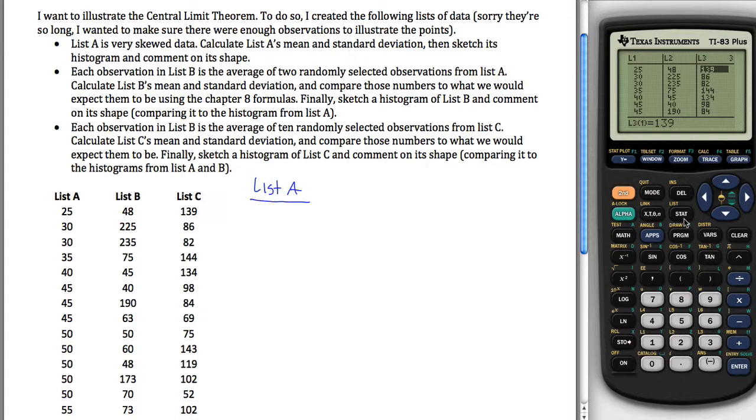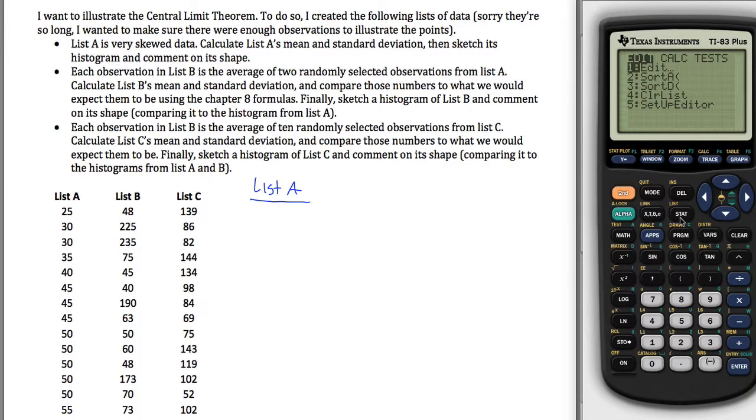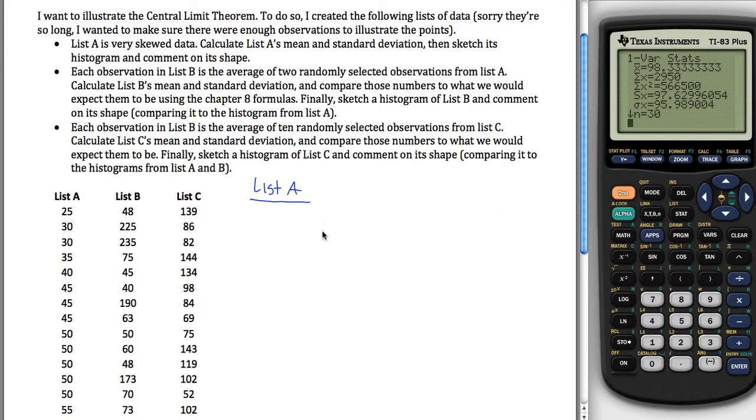Calculate the mean and the standard deviation. So we can do that if you - the way to get your calculator to calculate the mean and the standard deviation is hit your stat button, and then go to calc, and then one variable statistics. So I want one variable statistics on L1, and that will give me my mean and my standard deviation. So the mean is up here, that's - the mean is equal to 98.33, and my standard deviation is equal to 97.63.